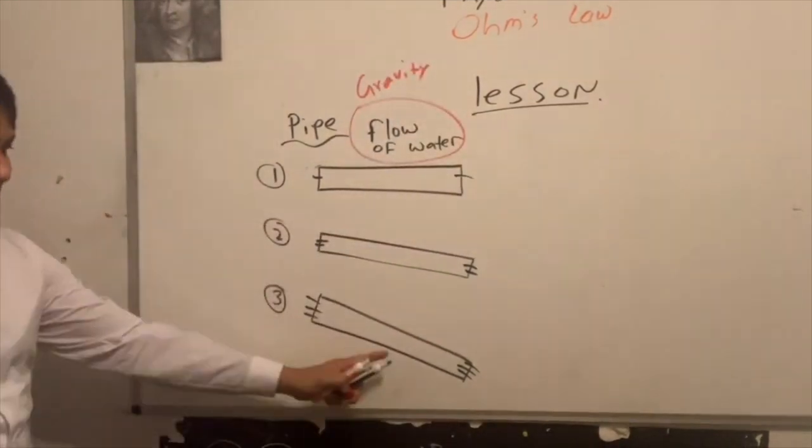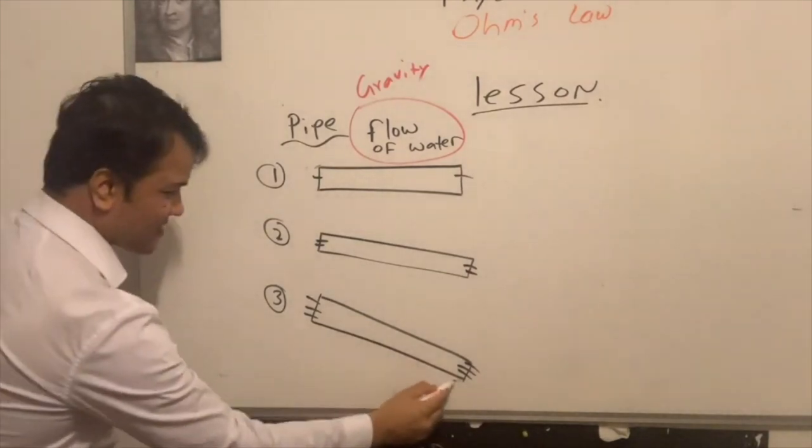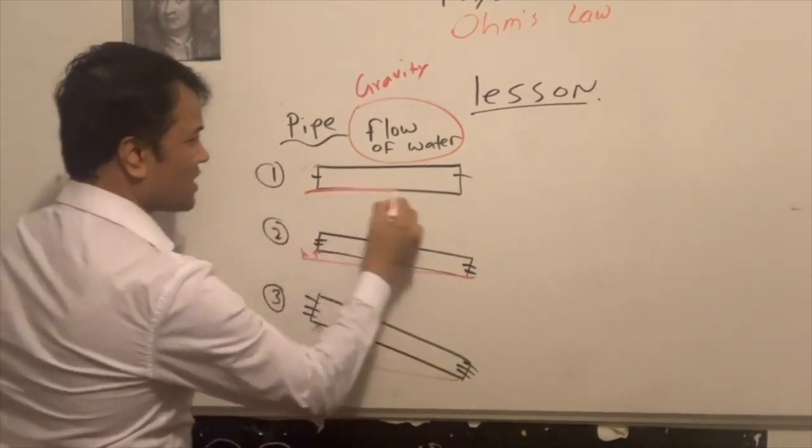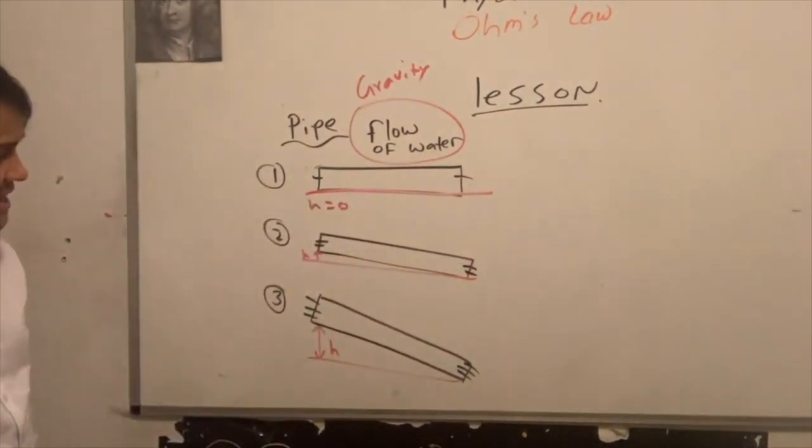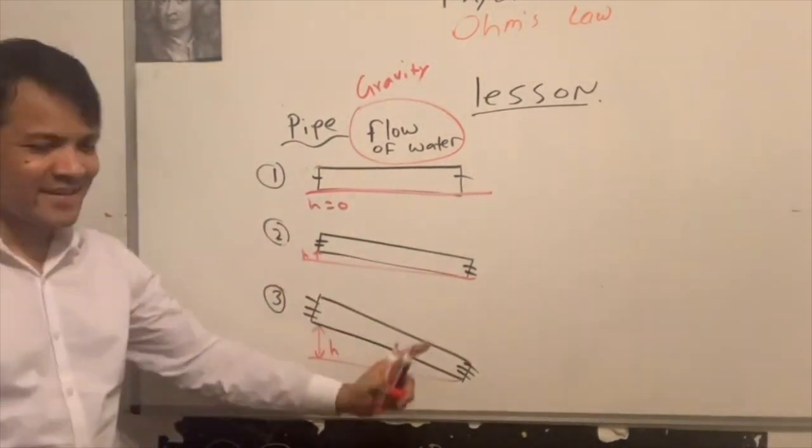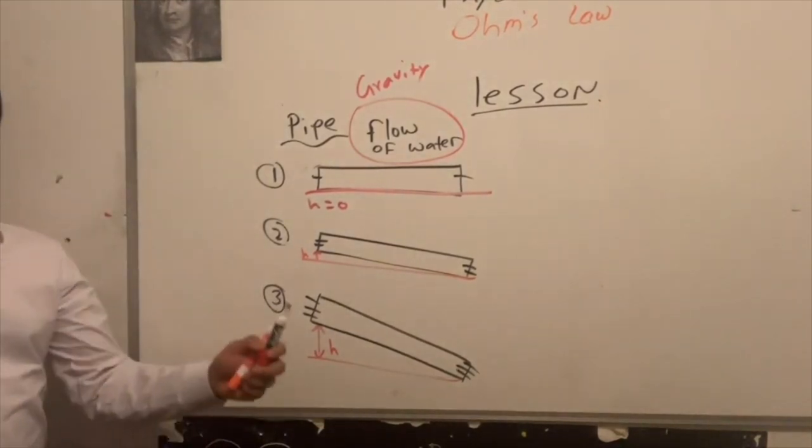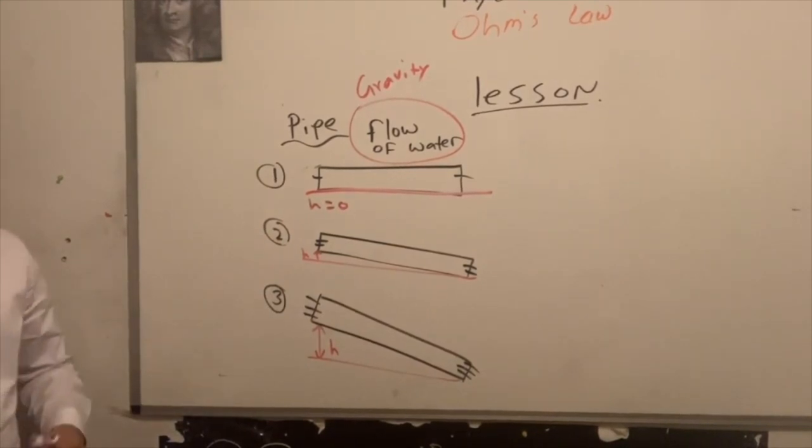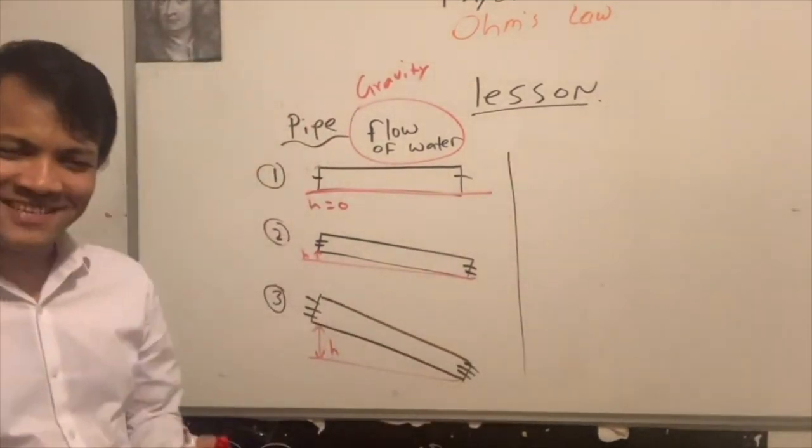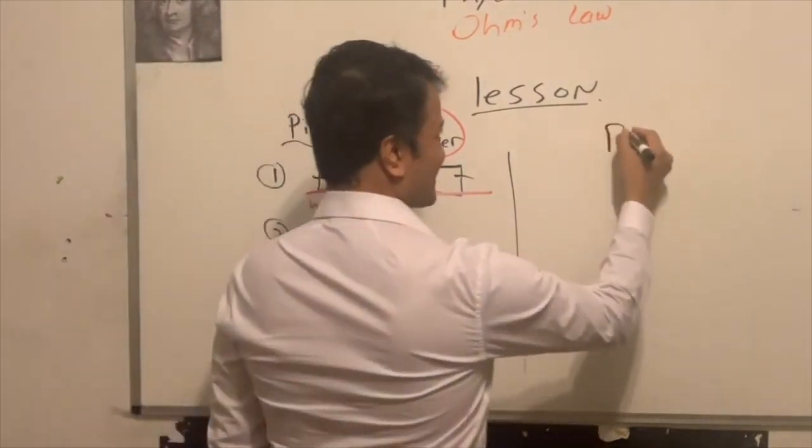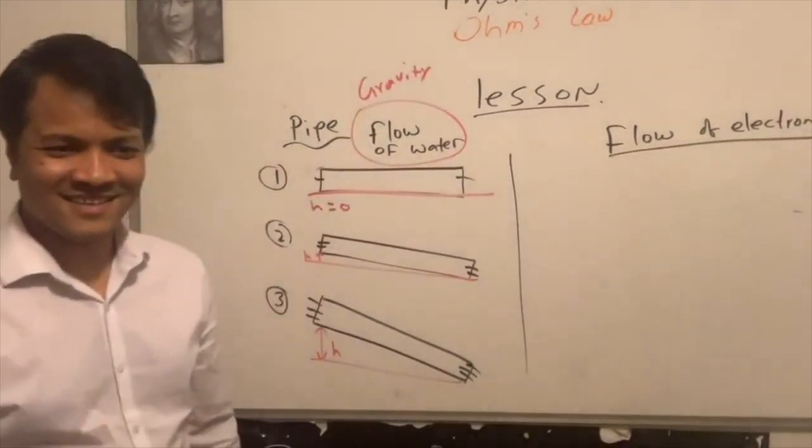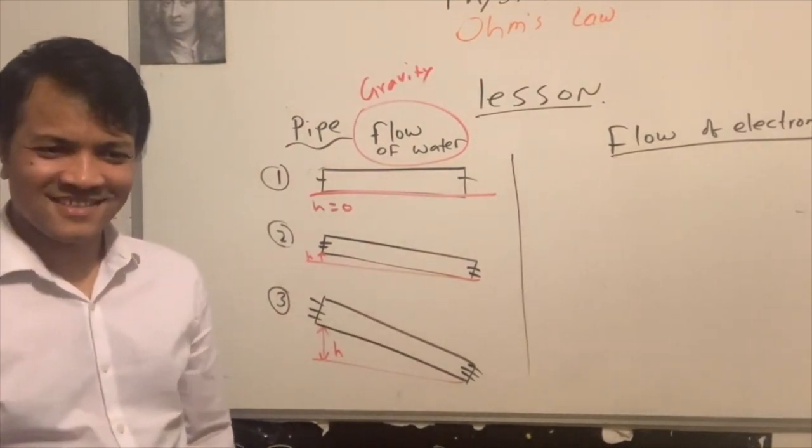So which one has more gravitational potential energy? Three. This one has more gravitational potential energy because of the height. And this one is zero, basically none. So the flow of water is almost zero. Flow of water is far from zero. Why are we talking about gravitational potential energy? Because that affects the flow of water. We are not interested in the flow of water. We are interested in the flow of electrons. But the flow of electrons is basically the same as flow of water.